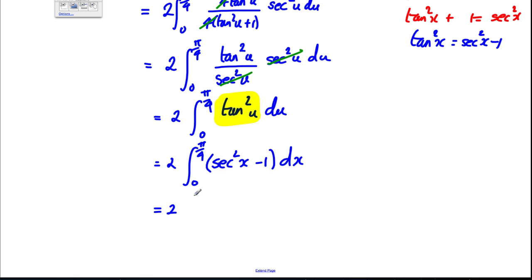Now, magically, we can integrate this thing. In the formula booklet, we have the integral of sec² which is tan(x). And the integral of negative one is negative x. And that's between zero and π by four.